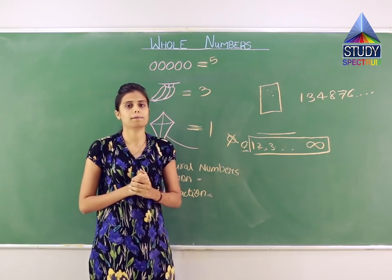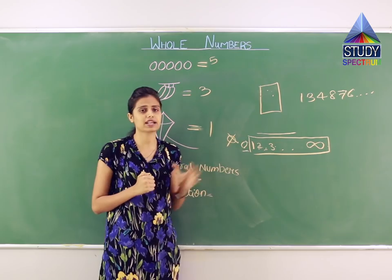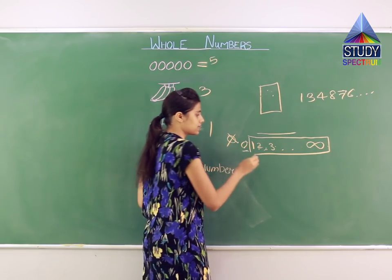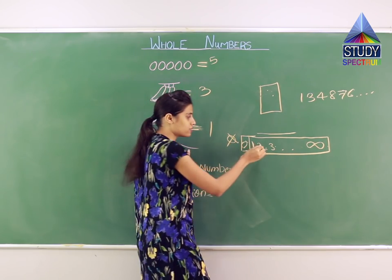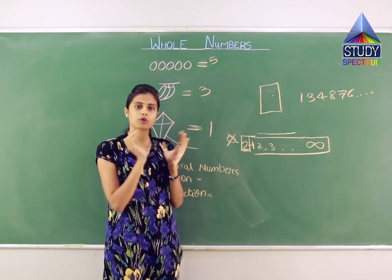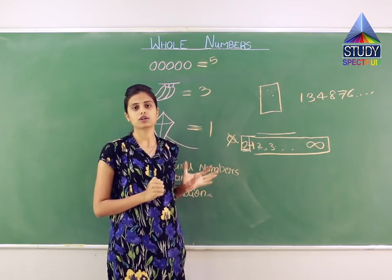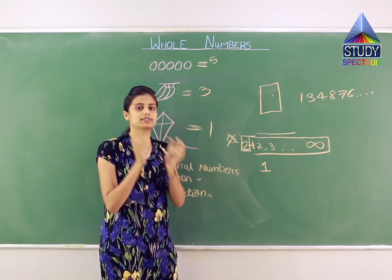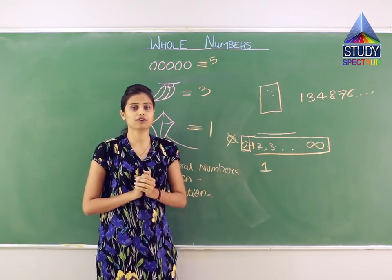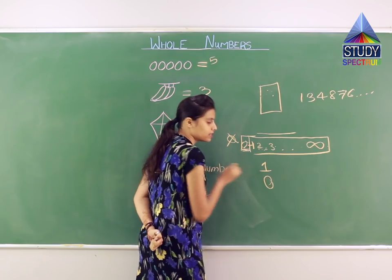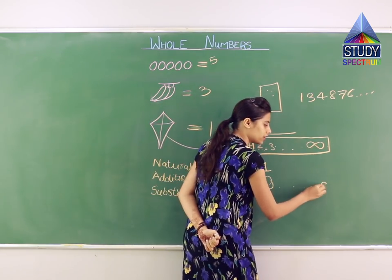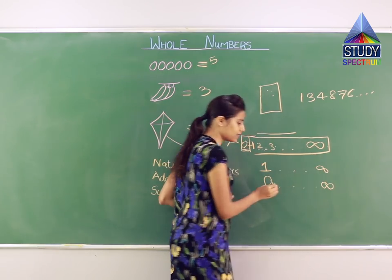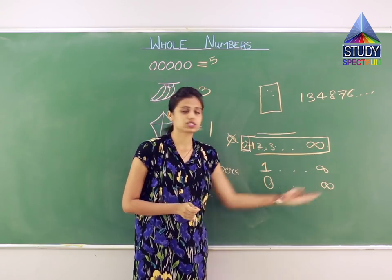Now the chapter is about whole numbers. Why did we first understand natural numbers? Because there is a connection. The whole number always starts from 0. That means natural numbers plus 0 — this whole group of numbers — forms the whole numbers. The only difference is the smallest natural number is 1, while the smallest whole number is 0. Whole numbers start from 0 and go up till infinity.